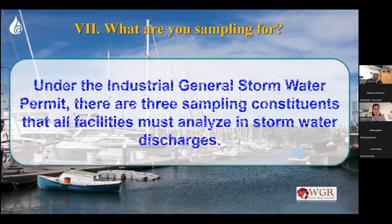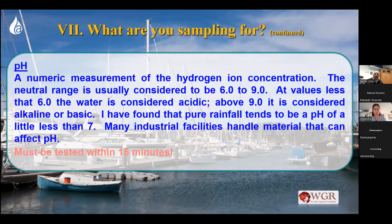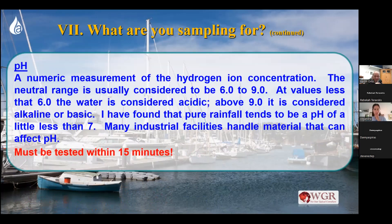Under the general permit, there are three mandatory sampling constituents. If you're under NOI coverage, everybody has to sample for pH — the acidity in water. Previously in California you could have the lab do your pH as long as it was done within 24 hours of collecting your sample. But the federal standard now requires pH to be tested within 15 minutes of collecting your sample. California can't make things less stringent than the Clean Water Act's multi-sector permit, so now everybody has to test for pH within 15 minutes of collecting your sample.